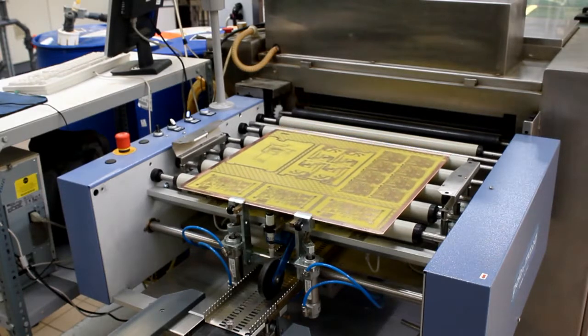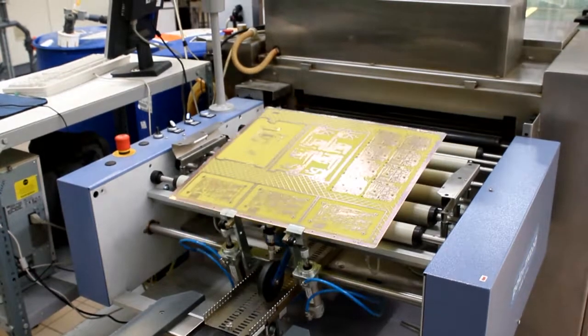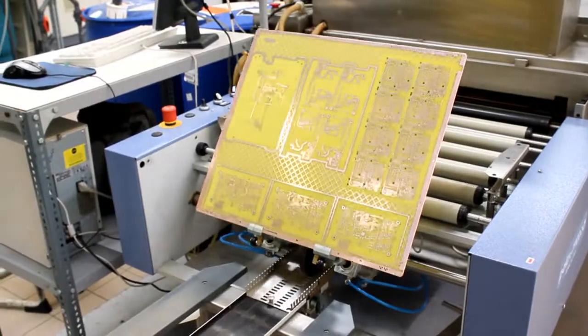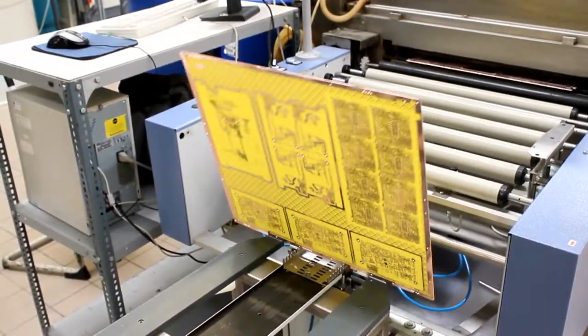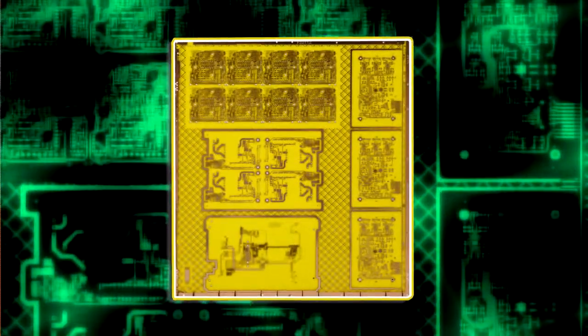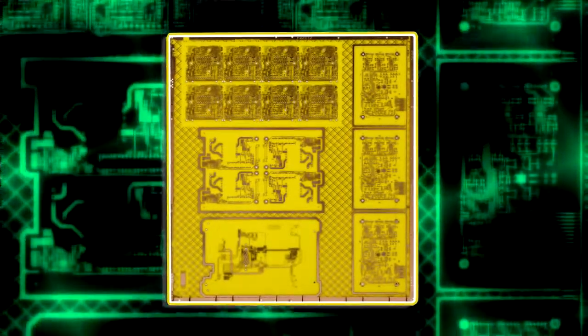Finally, we strip off the thin tin coating which protected the copper image. So now you can see that only designed copper pattern remains. As the boards emerge from the line they are stacked automatically.